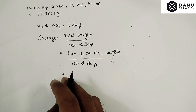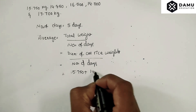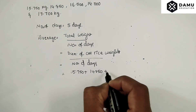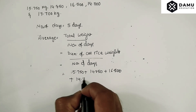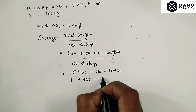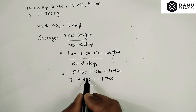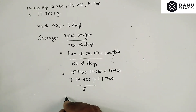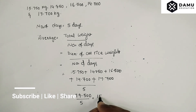The sum of all the rice will be 15.750 plus 14.850 plus 16.500 plus 14.700 plus 17.700, divided by the number of days, which is 5. Adding all these values gives us 79.500, divided by 5.